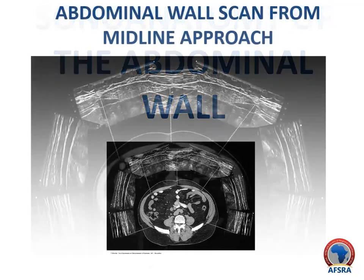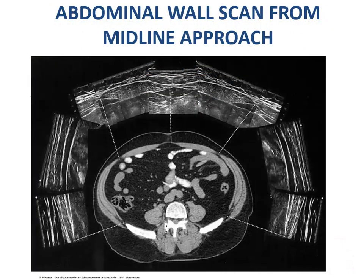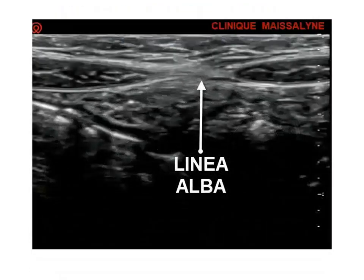Scan the abdomen from the midline. This allows identification of the linea alba and the rectus abdominis muscle. The rectus abdominis muscles lie on either side of the midline of the abdominal wall. They are encased within fascial envelopes — the rectus sheath — formed by the tendinous portions of the abdominal muscles. The two abdominal muscles are separated in the midline by the fusion of the aponeuroses of the abdominal muscles: the linea alba. The linea alba can be readily identified with ultrasound.